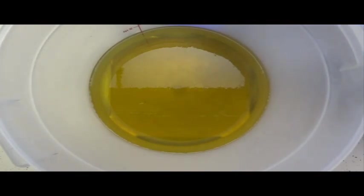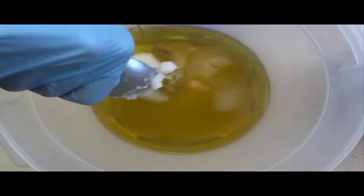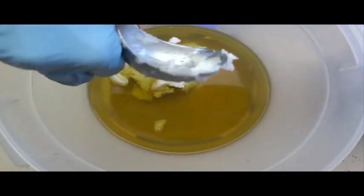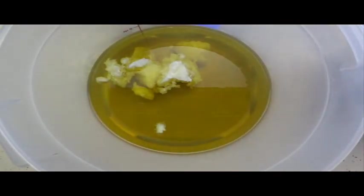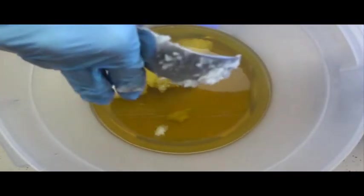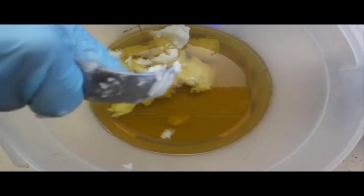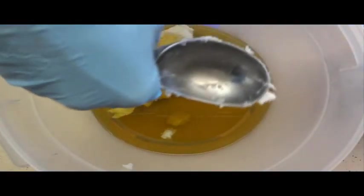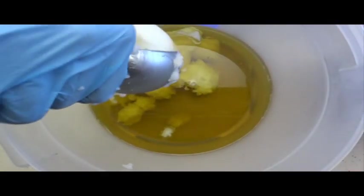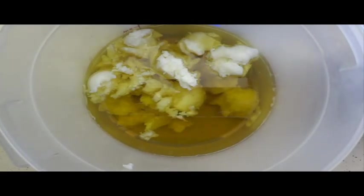Next up I have 16.3 ounces of coconut oil. When I make cold process oven process soaps I like to use olive oil because it handles the process very well. Next I'm going to add 8.1 ounces of castor oil. Castor oil makes bubbles.